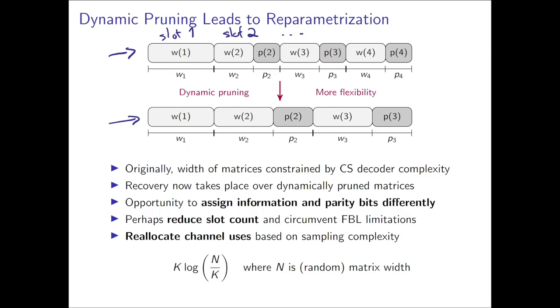Knowing that you will perform dynamic pruning of the columns, maybe you can use a different allocation. In this problem, the first slot is the same since we cannot do dynamic pruning for that slot, but the subsequent slots are wider. This leads to a larger sensing matrix, but hopefully after pruning, the matrix will be reduced down to a size that can be handled by the CS solvers. Another benefit is that it reduces the slot count, making wider slots, and this circumvents some of the limitations that are attached with the finite block length bound for multiple access.